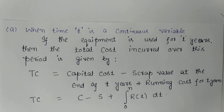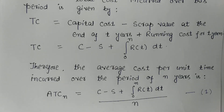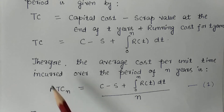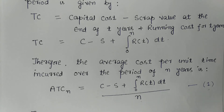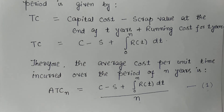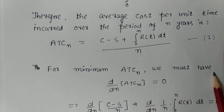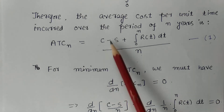Part A: when time T is a continuous variable. If the equipment is used for N years, the total cost incurred is: capital cost C minus scrap value S, plus the integral from 0 to N of R(T) dT. The average cost per unit time over N years equals total cost divided by N. Let this be equation number 1. To find the optimal N minimizing average total cost, we differentiate with respect to N and set the first derivative equal to zero.